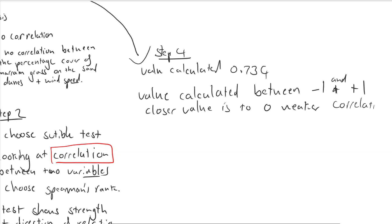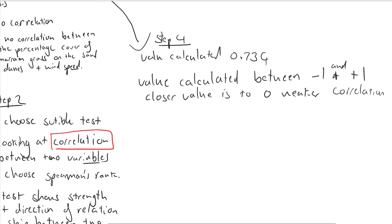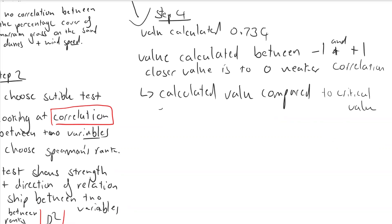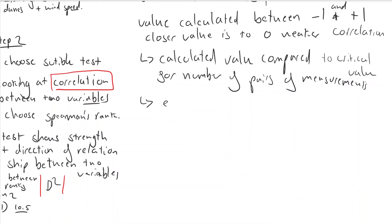Once we have the calculated test statistic we're going to have to look up the critical values of Spearman's rank for the number of pairs measurements. So for example in this test there were twelve pairs of measurements. For A level you look at the five percent level of the probability being caused by chance and at this level a five percent significance is 0.587 for twelve pairs of measurements.